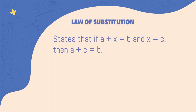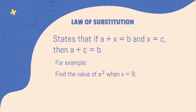The Law of Substitution — a little review from your junior high school algebra. The Law of Substitution states that if a plus x is equal to b, and x is equal to c, then a plus c equals b. For example, find the value of x squared when x is equal to 9. By substituting the value of x — in this case 9 — we get 9 squared, which is equal to 81.